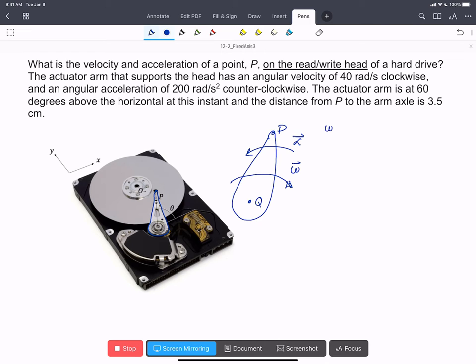We can write that omega, the vector, is minus 40 rads per second, because it's in the minus K hat, and alpha is 200 rads per second squared in the K hat.